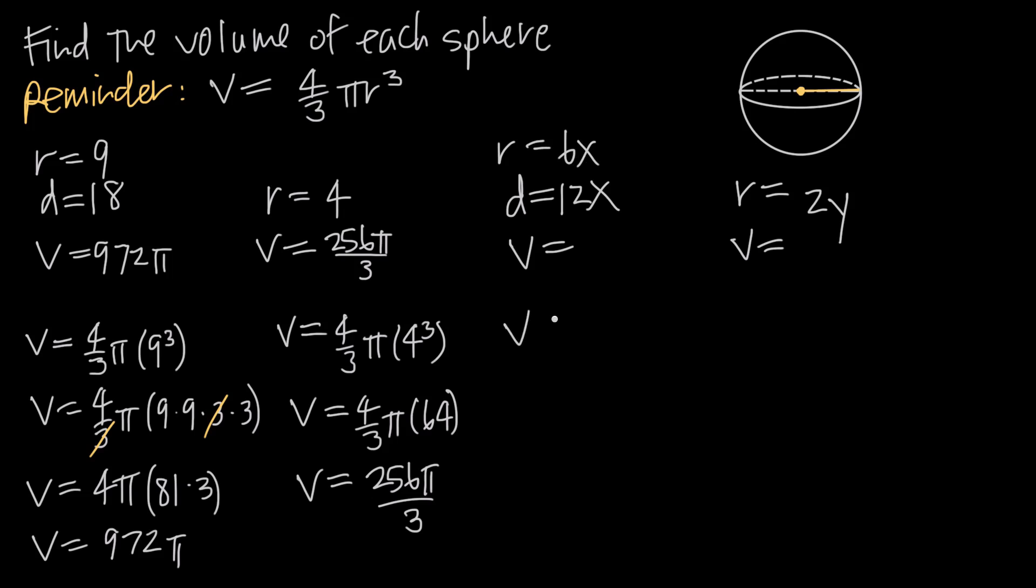and we just plug that into our volume formula. So we'll get volume is equal to 4/3 times pi times r cubed, or 6x cubed. And when we simplify, we'll get volume is equal to 4/3 pi. 6x cubed, we'll cube the 6, and we'll get 216. So 216. And then we'll cube the x and get x cubed, so times 216x cubed. Now 216 divided by 3 is 72, so we can cancel the 3 and we can call this 216, 72. Then 72 times 4 is 288, so we'll get volume is equal to 288 pi x cubed.